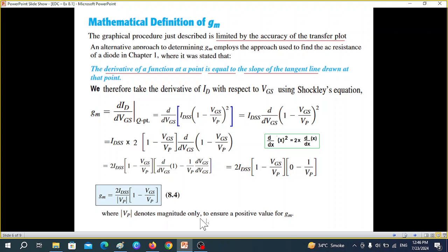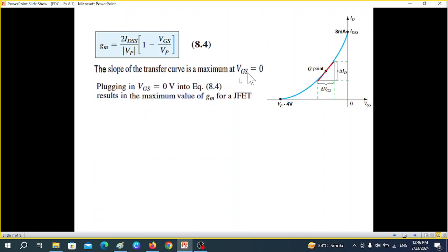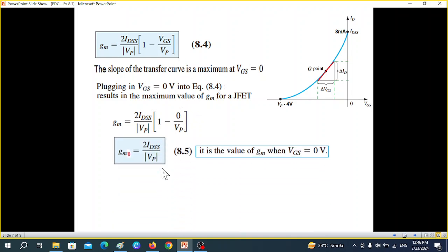But VP denotes the magnitude only to ensure the positive value of GM. So we are taking the mod here of VP. Okay, so we were at this equation. The slope of the transfer curve is maximum at VGS is equal to 0. Now you can see that as we come closer to 0, the slope is getting maximum. So the maximum value at 0. And the equation we can call it. Plugging VGS is equal to 0 here, we can find the maximum. And we'll call now this VP 0, VGS 0. So we give it a new name. I will call it GM0. Actually should have been written as GM maximum. But anyway, GM0 is this value. This is 0. It is the value of GM when VGS is equal to 0. That is why we are writing 0.